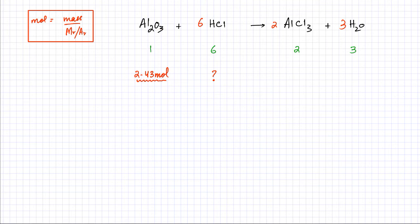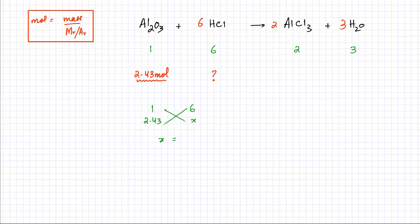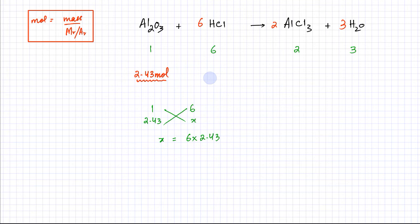Using the ratio of Al₂O₃ to HCl which is 1:6 — one reacts with six, so 2.43 moles reacts with x. Cross multiplying: x × 1 = 6 × 2.43. Using a calculator: 6 × 2.43 = 14.58 moles of HCl.